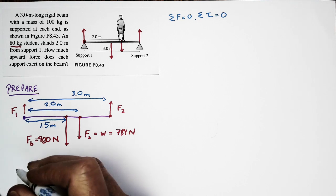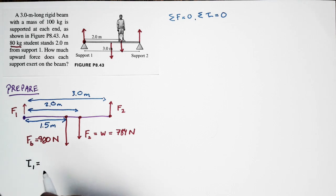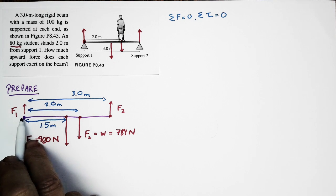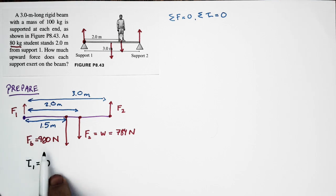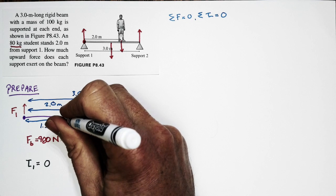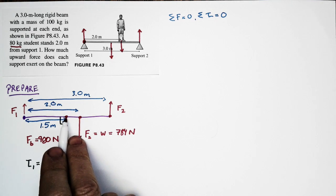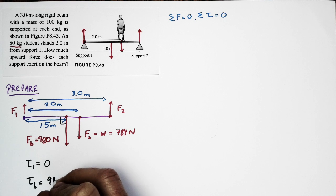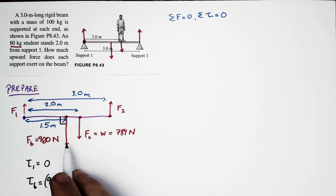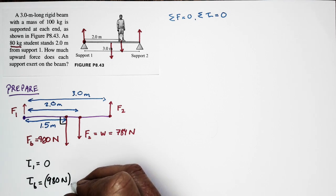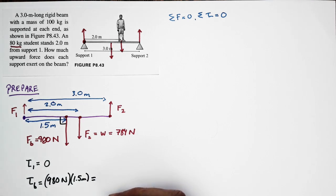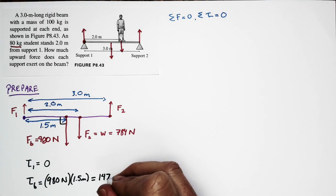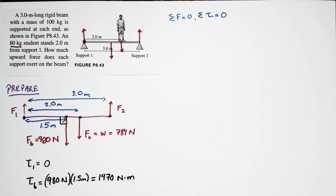Now let's calculate torques from left to right. The torque due to F1 is zero because it acts right at the pivot point. For the beam's weight Fb of 980 Newtons, it acts at 1.5 meters from the pivot at a right angle — the force acts perpendicular to the beam. So the torque due to the beam's weight is 980 Newtons × 1.5 meters = 1,470 Newton-meters. Newton-meter is our unit for torque.